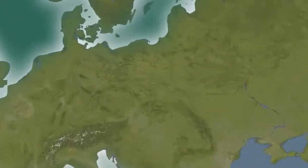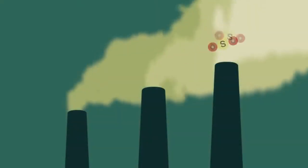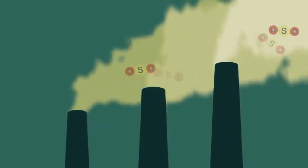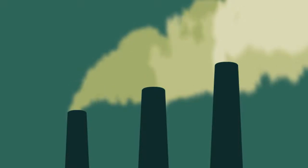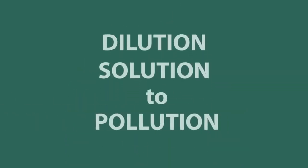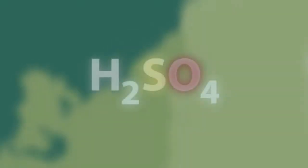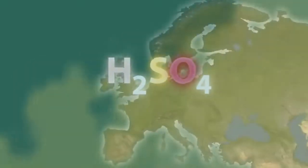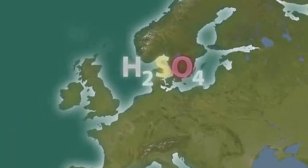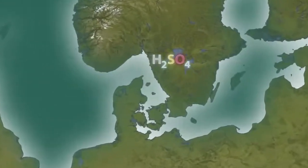Let's look at power stations in Europe. For many years, these stations have been using tall chimneys to disperse the sulfur dioxide far away, thinking that dilution was the solution to pollution. However, the acid did not get diluted, but instead was carried in the wind to Scandinavia, where it fell into Swedish lakes.